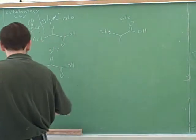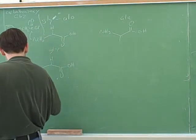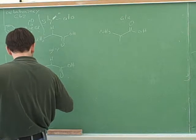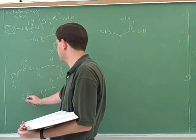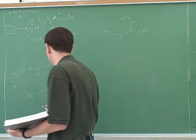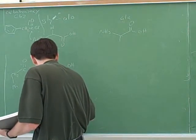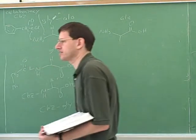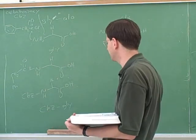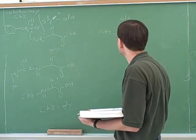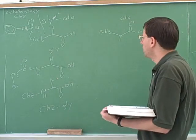Now, for short, to show that this was protected, we could just write C-B-Z to show it's protected, or even for shorter, we could write it like this. It's glycine with a C-B-Z on the N-terminus to show that we protected that N-terminus.